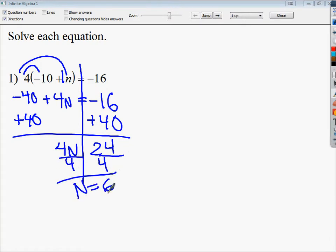If you want to test it out, negative 10 plus 6 gives you negative 4. Negative 4 times 4 gives you negative 16. So your final answer is either way, n equals 6.